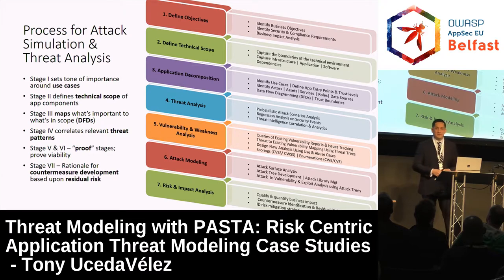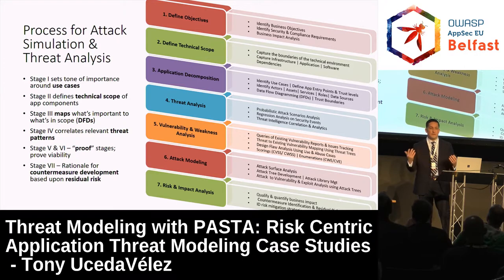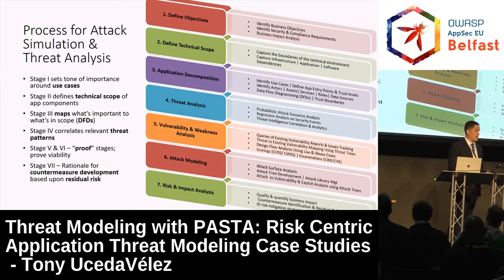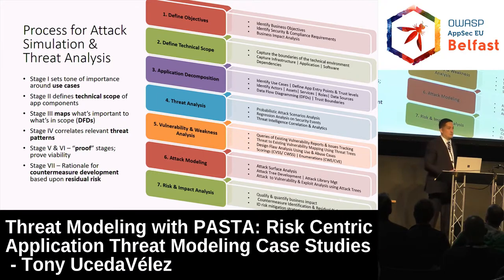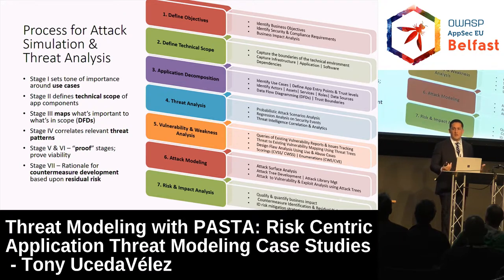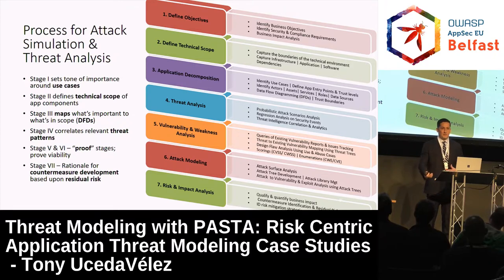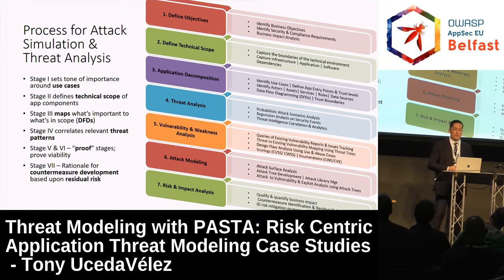This is the PASTA framework. It's meant to be a true methodology. You hear people reference Stride — Stride is a threat categorization model. It's a good threat categorization model where you can put certain types of threats into different buckets. But PASTA is really meant to be a process for simulating attacks so that you can do threat analysis for your applications. It has seven stages, and each stage has different activities. In the book we've mapped those activities to OpenSAM and BSIMM so that if you want to crawl, walk, and run, you can do that with the different stages.